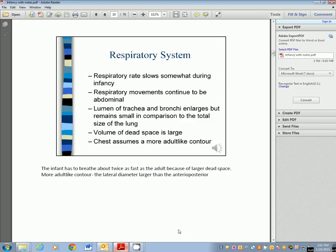Respiratory system, very important to remember this. Respiratory rate does slow somewhat during infancy, but respiratory movements continue to be abdominal breathing. Abdominal breathing is normal for children up to the age of seven, because the intercostal muscles are still immature. The lumen of the trachea and bronchi enlarges but remains small in comparison to the total size of the lungs. That means their volume of dead space is quite large. The infant has to breathe about twice as fast as an adult because of that larger dead space.